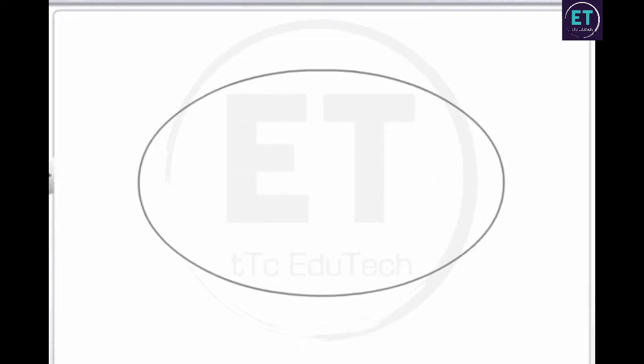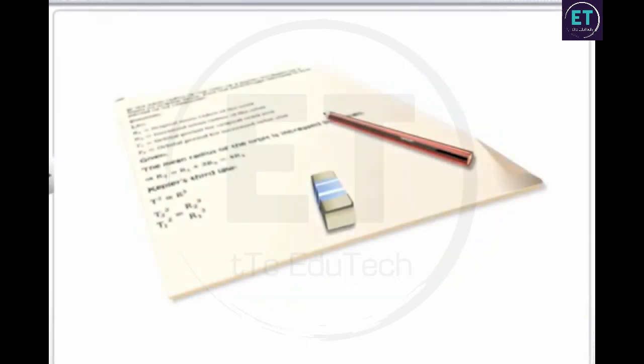This brings us to the end of this lesson on Kepler's laws of planetary motion. In this lesson, you learned about Kepler's three laws of planetary motion. The section on solved problems provides you an opportunity to review some model problems based on these concepts. To revisit the key points covered in this lesson, please review the flashcard at the end of this lesson.